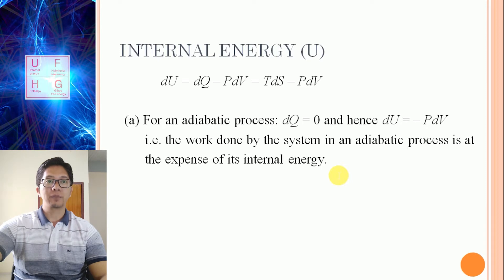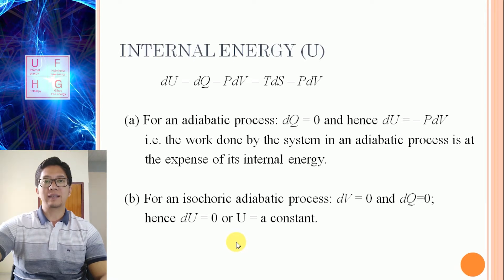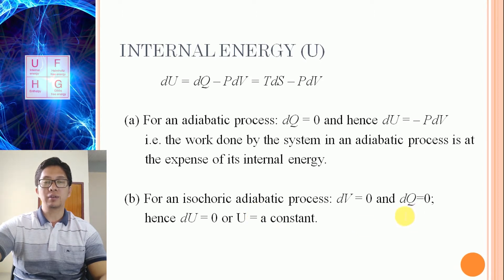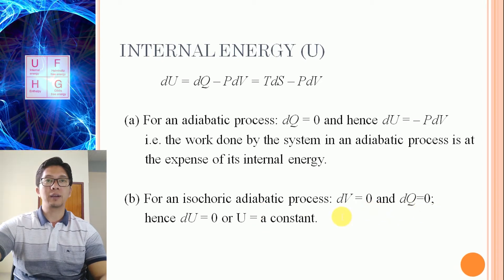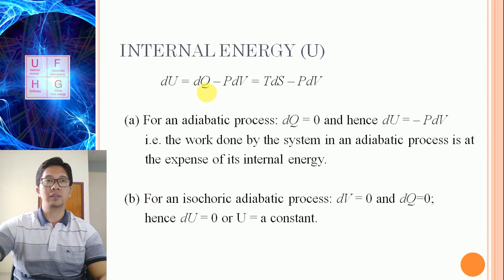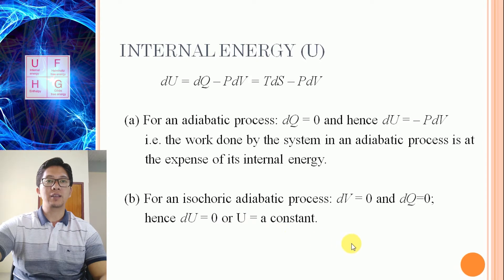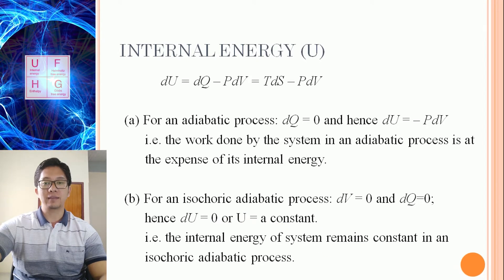For an isochoric adiabatic process: isochoric means volume is constant, so DV equals zero; adiabatic means no heat transfer, so DQ equals zero. With both conditions, DU equals zero — that is, U is constant. In an isochoric adiabatic process, the internal energy of the system remains constant.